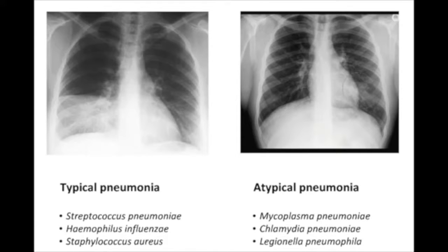Respiratory infections — how do people with respiratory infections typically present? The big things to pay attention to are vital signs: temperature for any infectious process, respiratory rate for a respiratory process, and heart rate as a sign of the body under stress. As soon as you start thinking about a respiratory infection, Step 1 is going to ask you either the diagnosis or the treatment, which almost always requires antibiotics if it's a bacterial infection.